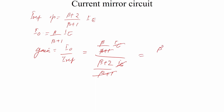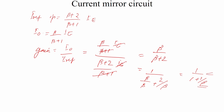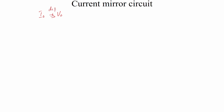Simplifying the ratio I0/I-reference, since 2/beta is very small, I0 is almost equal to I-reference. The second non-ideal factor is the early effect, which makes I0 depend on the collector voltage V0. The collector voltage of Q2 affects the output current I0.